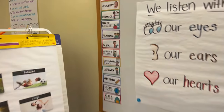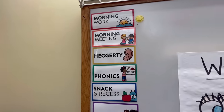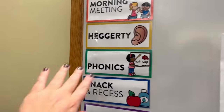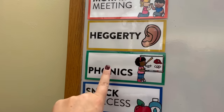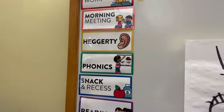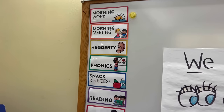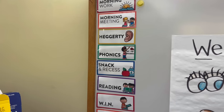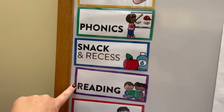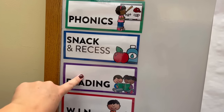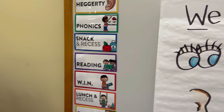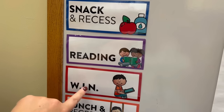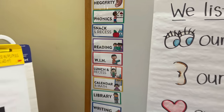The easiest way to do that is to start with the schedule. For literacy, we have 10 minutes of Hegarty and then 30 minutes of phonics, right after our morning meeting. So right there we have 40 minutes of phonemic awareness, phonological awareness, and explicit phonics instruction. Then we go into snack and recess, and then we have our reading block from 10 to 10:50, split into two parts, which is also where I meet with some small groups.